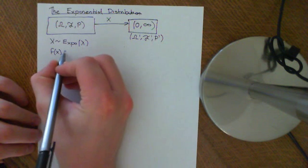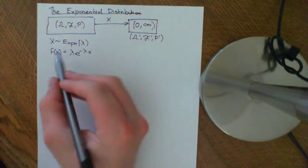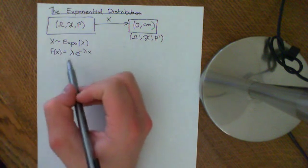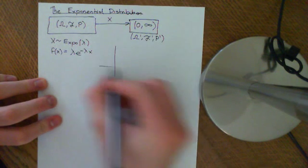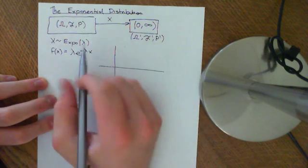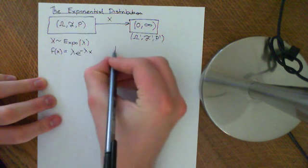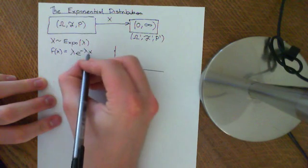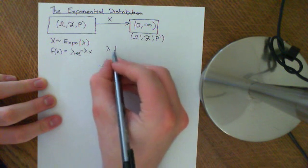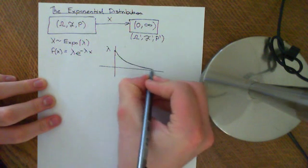The PDF for the exponential distribution is lambda e to the negative lambda x. So you give me a little x, and if you want to know the PDF of that value x, plug it into this formula. If we plot this as a graph, it looks like a negative exponential. If you put in 0, you get that it equals lambda, because e to the power of 0 is 1. It isn't defined on 0, but it converges up to that value, so it goes down like a negative exponential.